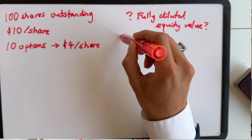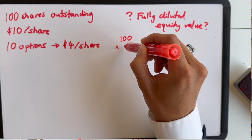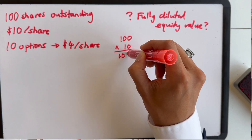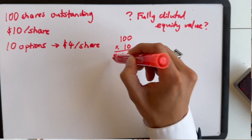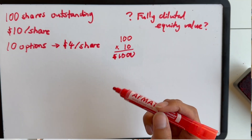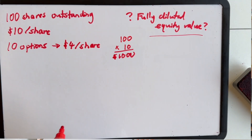The first thing we need to do is understand what the basic equity value is. The basic equity value is very simply the number of shares outstanding multiplied by the value of those shares. So that's just 100 shares times $10 per share, which gives you $1,000 in equity value. Now that's pretty simple. We want to know the fully diluted equity value.